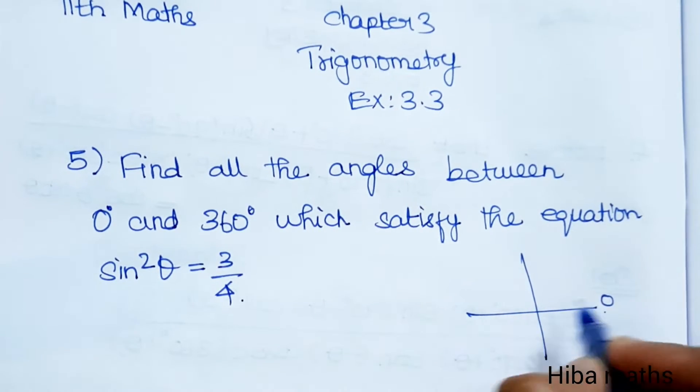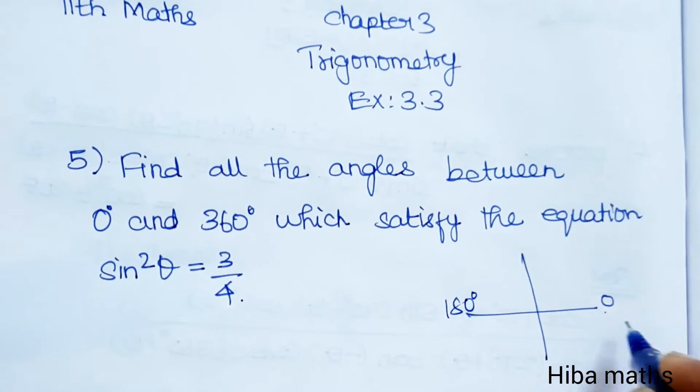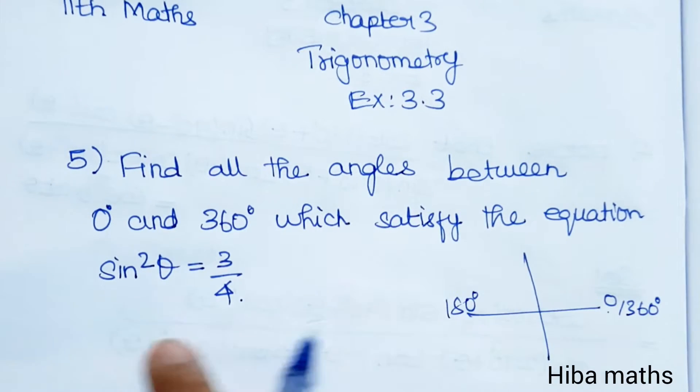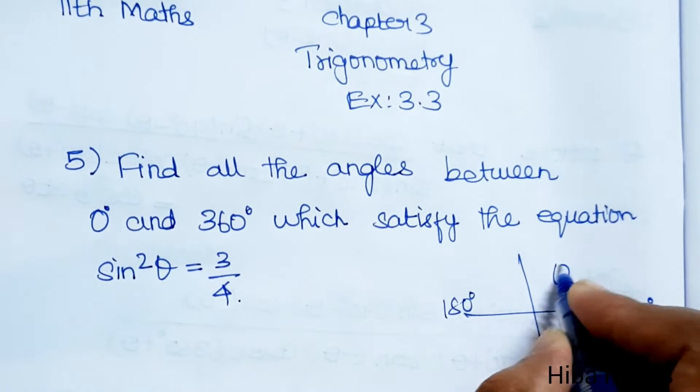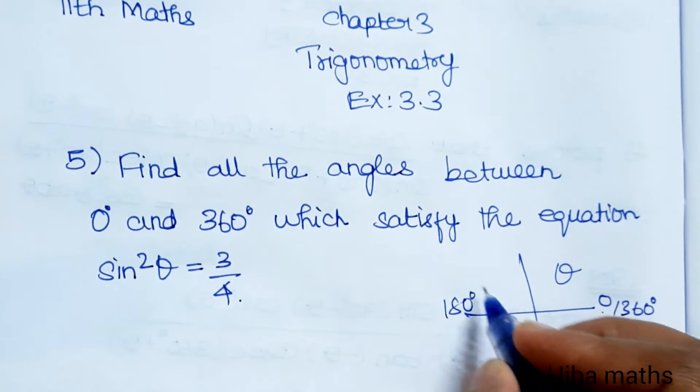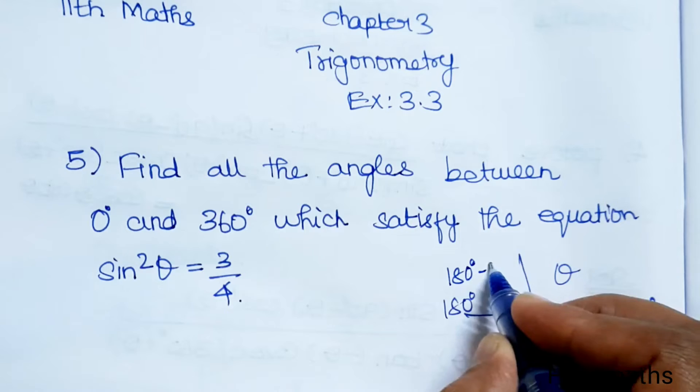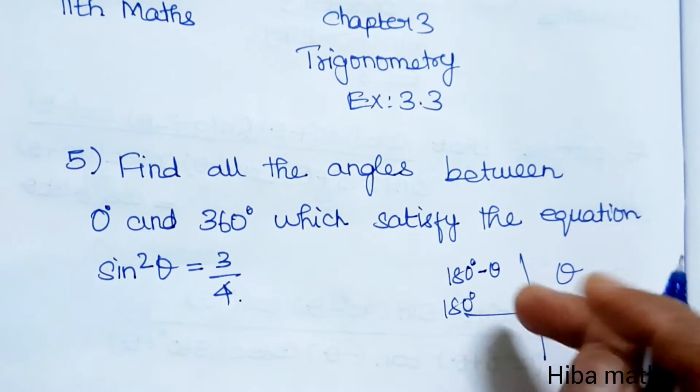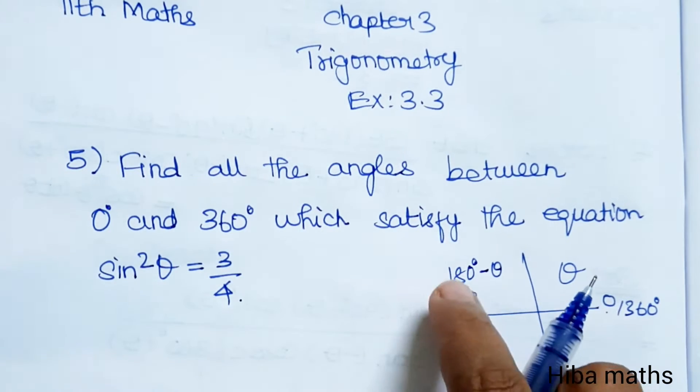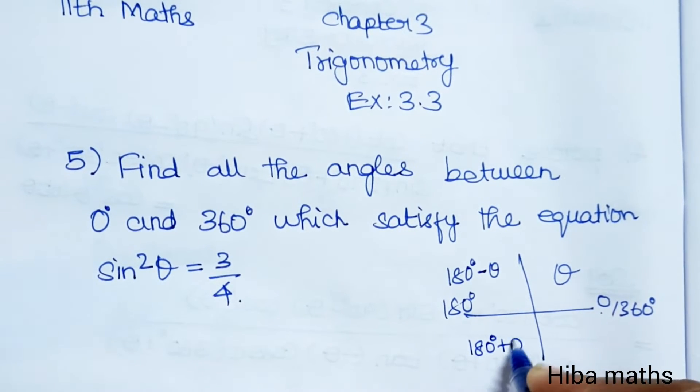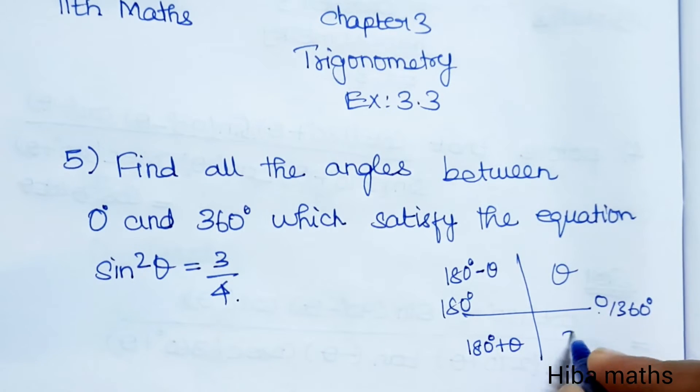The range is 0 to 180 to 360. Since theta can be positive, first quadrant gives theta, second quadrant gives 180 minus theta, third quadrant gives 180 plus theta, and fourth quadrant gives 360 degree minus theta.